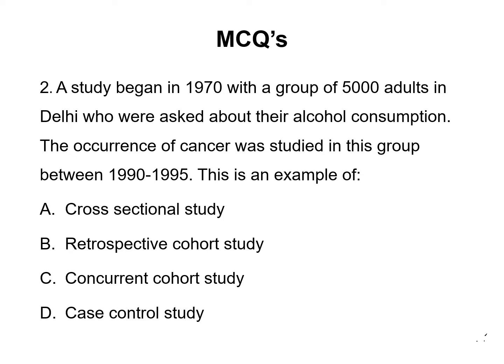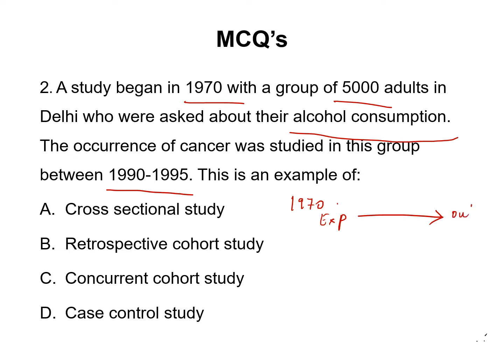The study begins in the year 1970 with 5,000 adults who were asked about their exposure status, which is alcohol consumption. The occurrence of cancer is studied between 1990 to 1995, which is 20 years later.